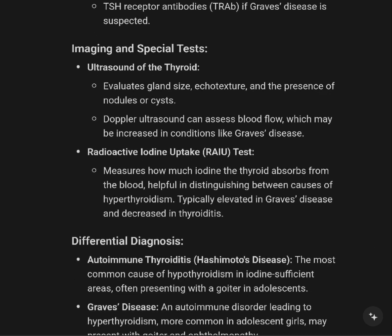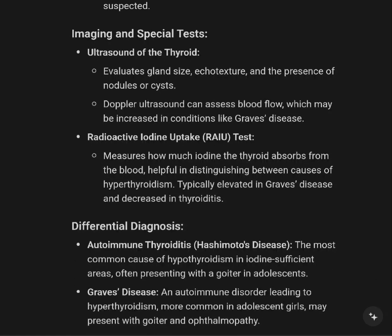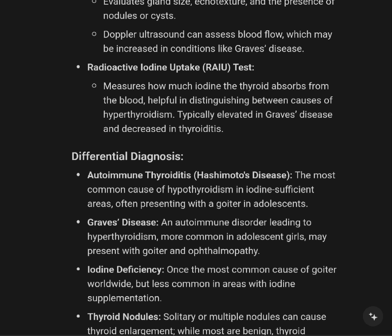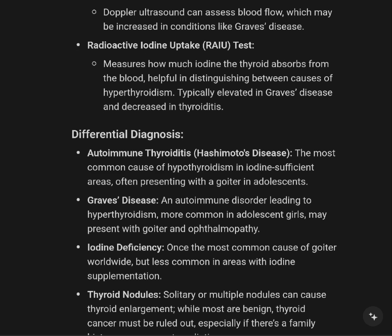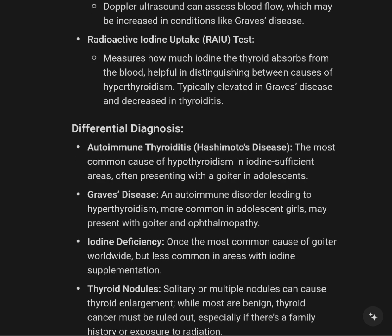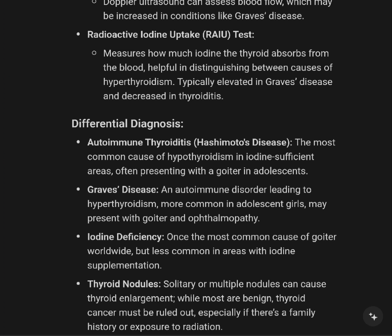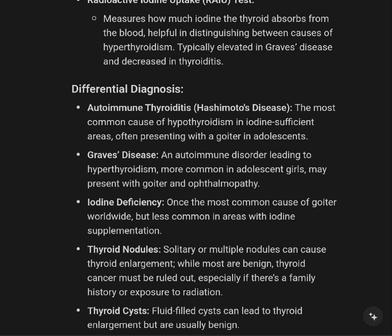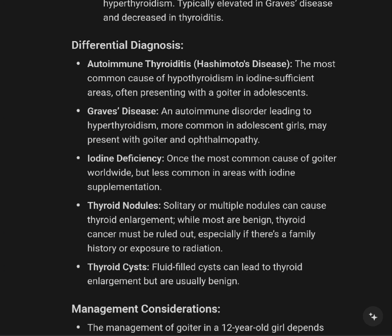Imaging and special tests: Ultrasound of the thyroid evaluates gland size, echo-texture, and the presence of nodules. Doppler ultrasound can assess blood flow, which may be increased in conditions like Graves' disease. Radioactive iodine uptake — RAIU — test measures how much iodine the thyroid absorbs from the blood, helpful in distinguishing causes of hyperthyroidism, typically elevated in Graves' disease and suppressed in thyroiditis.